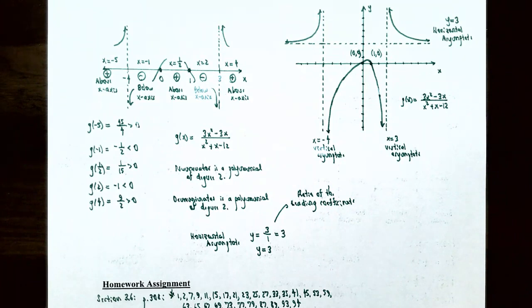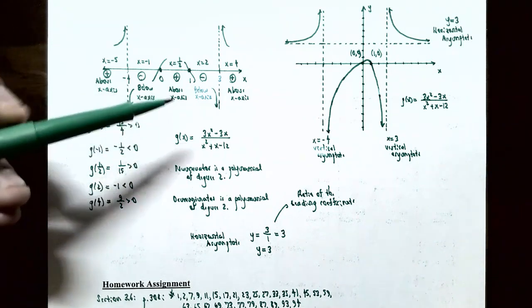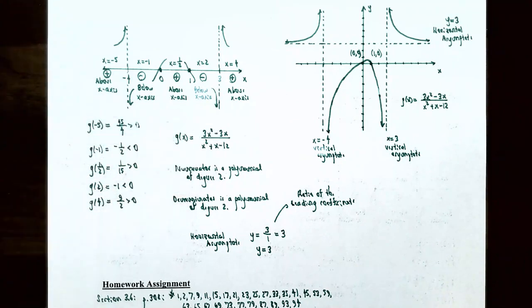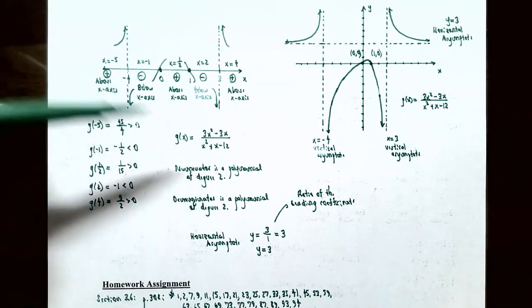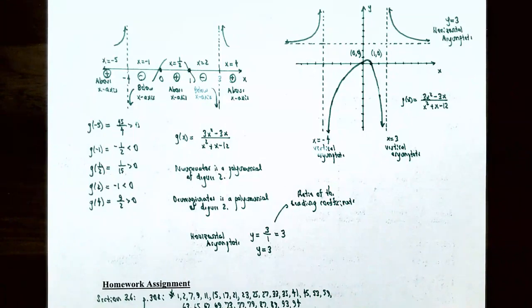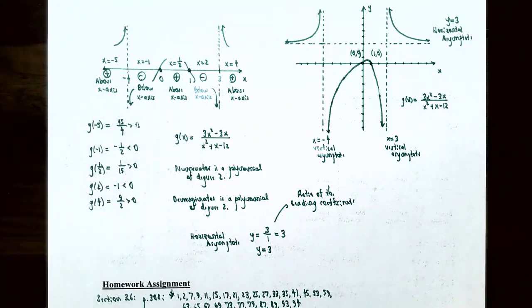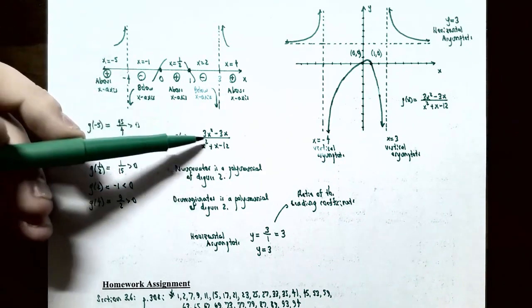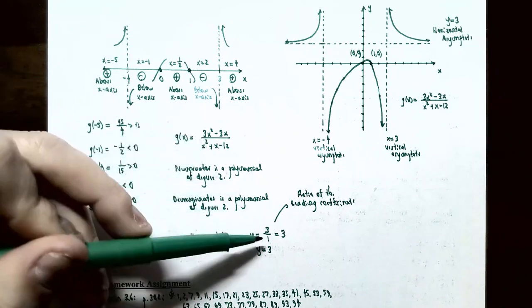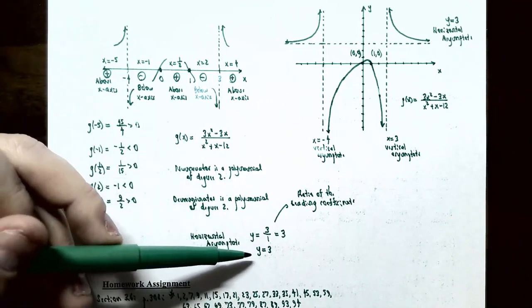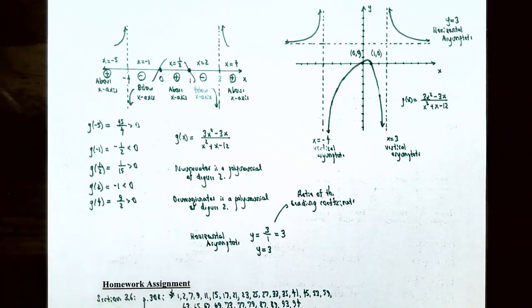Now find the horizontal asymptote. g(x) = (3x² - 3x) / (x² + x - 12): both numerator and denominator have degree 2, making it an improper rational function. When degrees are equal, the horizontal asymptote is y equals the ratio of leading coefficients: 3/1 = 3. So the horizontal asymptote is y = 3. As x → ±∞, y approaches 3.